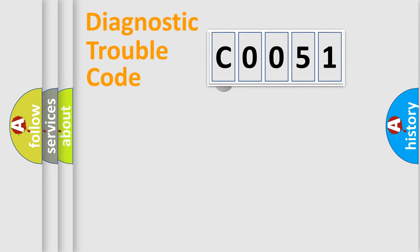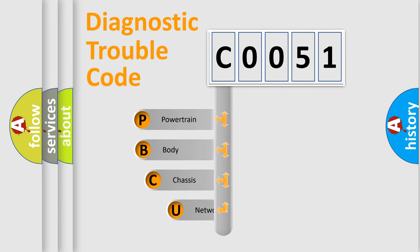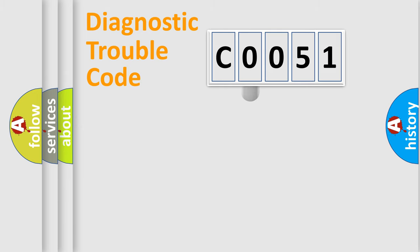First, let's look at the history of diagnostic fault code composition according to the OBD2 protocol, which is unified for all automakers since 2000. We divide the electric system of automobile into four basic units: Powertrain, Body, Chassis, and Network. This distribution is defined in the first character code.